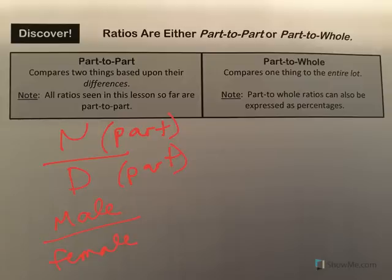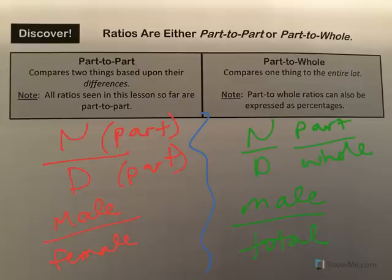Whereas if we're talking about part-to-whole, numerator-denominator — the numerator is part of the population, while the denominator is everybody. So this would be like males to the total population. There's the difference.